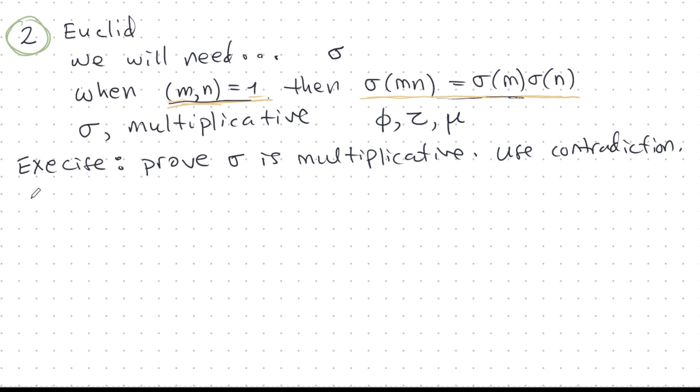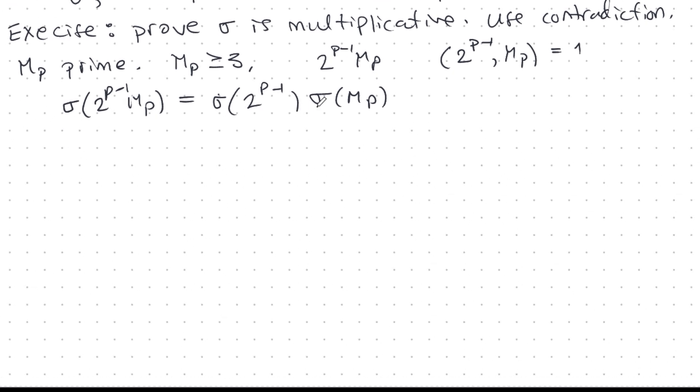So Euclid's theorem begins by assuming that Mp is a prime Mersenne number. And because Mp is prime, then Mp has to be greater than or equal to 3. So Mp is never even. So let's look at this thing here, 2 power p minus 1, Mp. Well, these two factors, 2 power p minus 1 and Mp, they have GCD 1 because Mp is prime and it's odd, greater than or equal to 3, and 2 power p is just powers of 2. So the GCD has to be 1. So I can now apply our wonderful multiplicative property, and I get sigma 2 power p minus 1 Mp, and that's equal to, like so. And we can now calculate these two components separately.